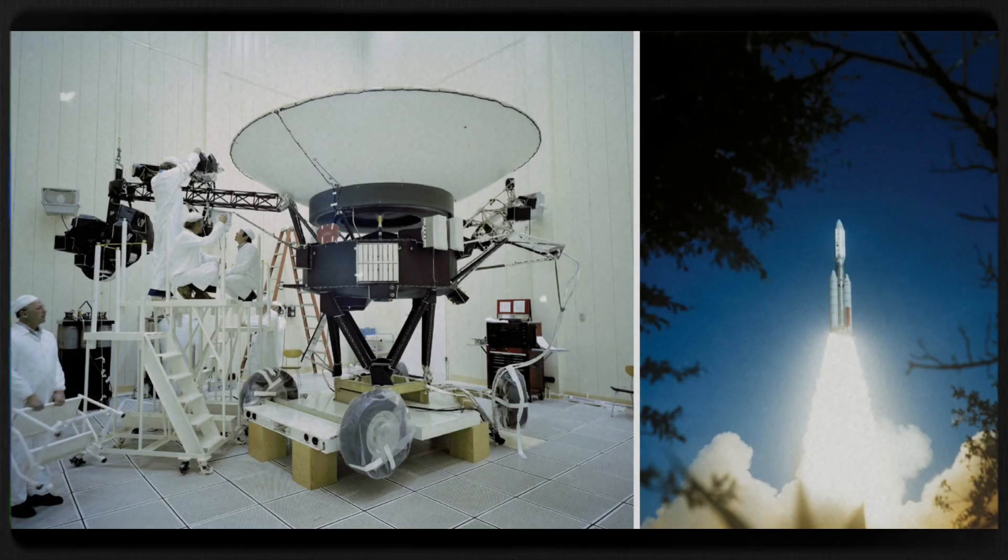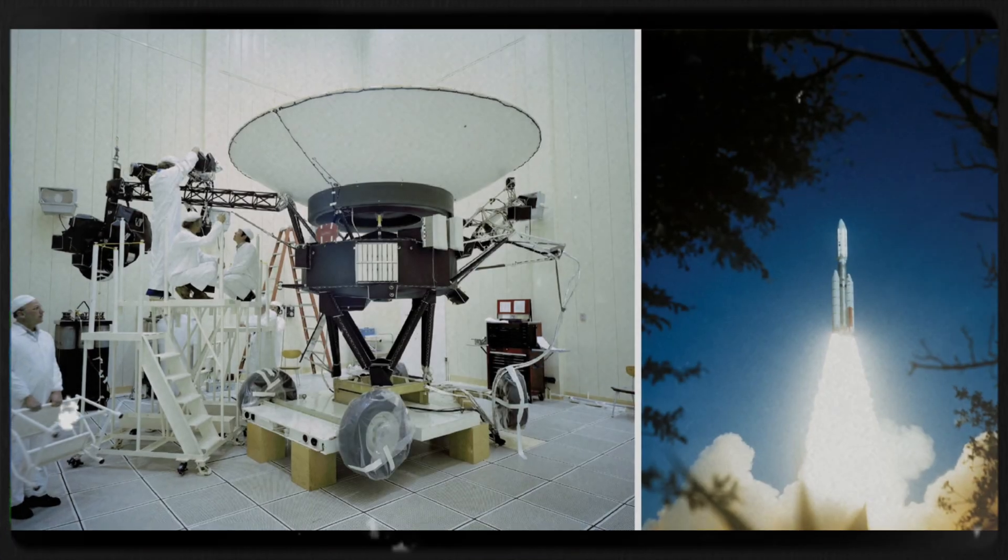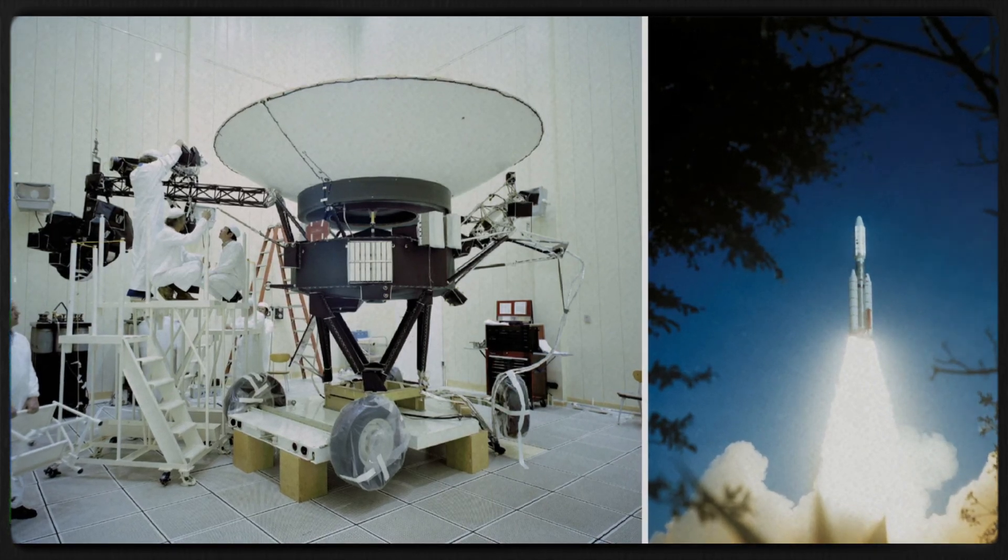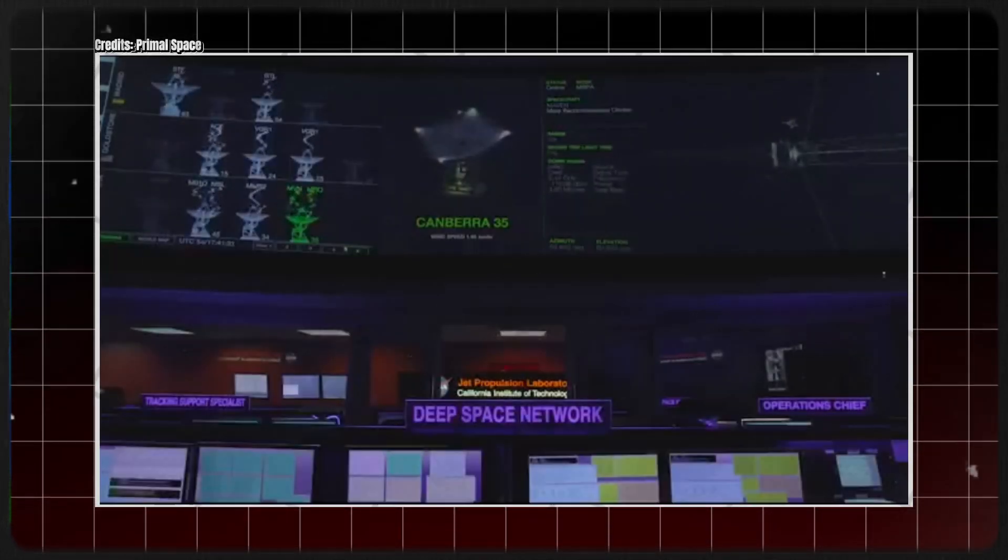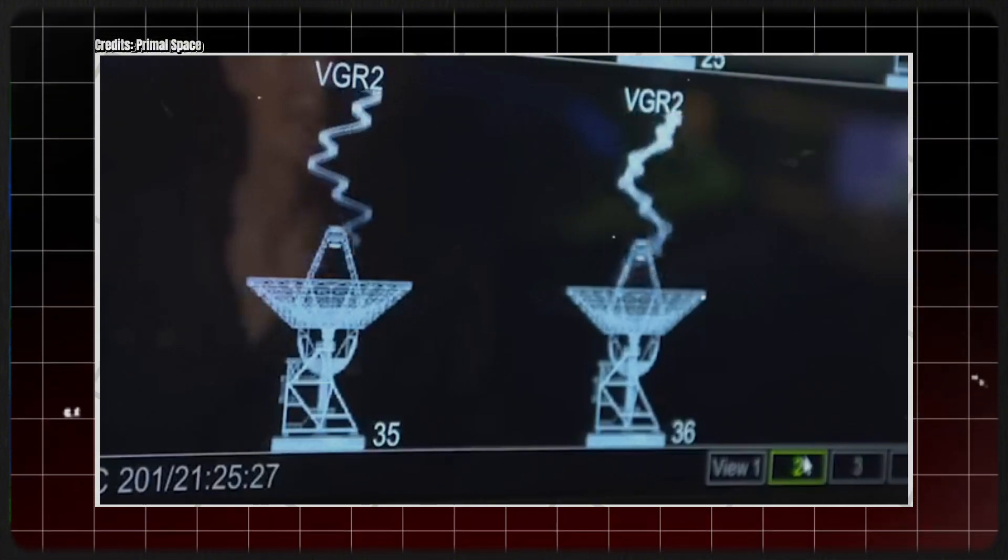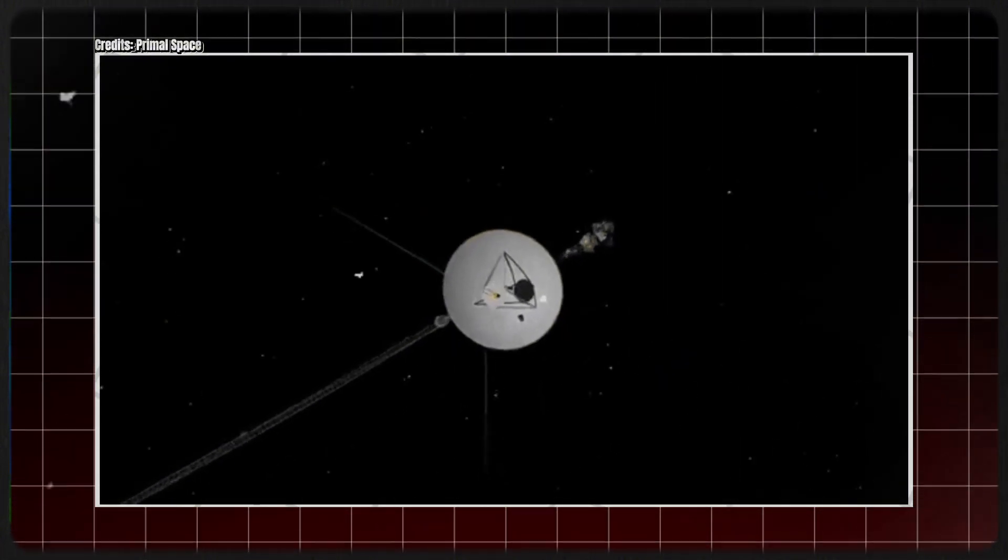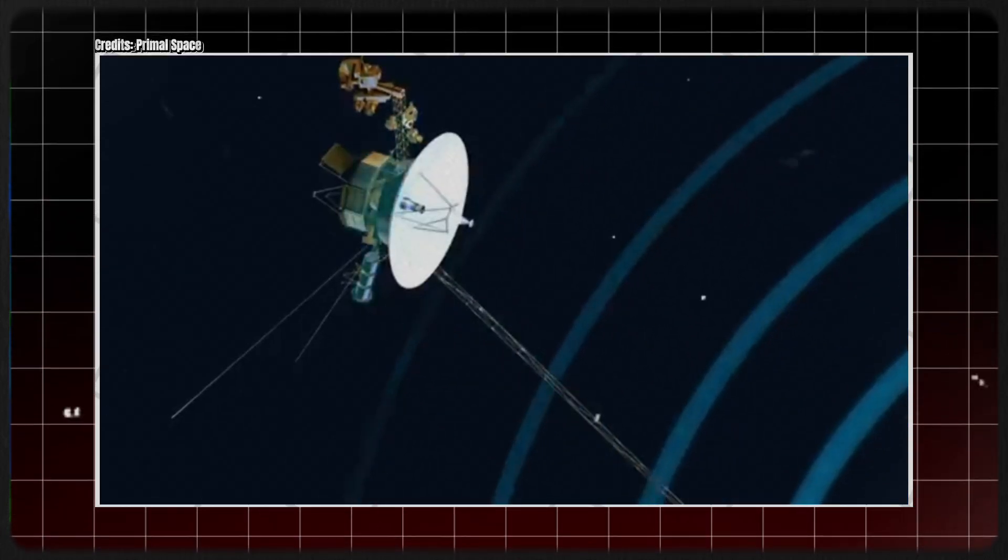The spacecraft are equipped with instruments that, while primitive by today's standards, have proven to be remarkably resilient and capable. For instance, the Voyagers carry around 3 million times less memory than modern cell phones, and their data transmission rate is about 38,000 times slower than a 5G internet connection.